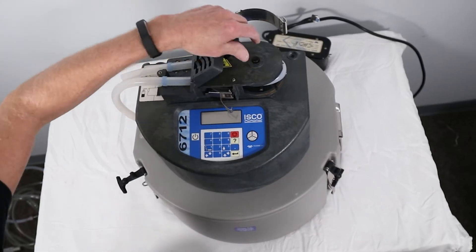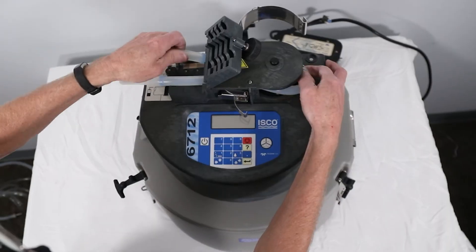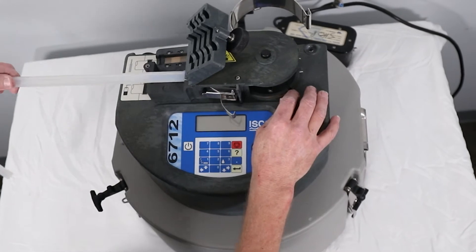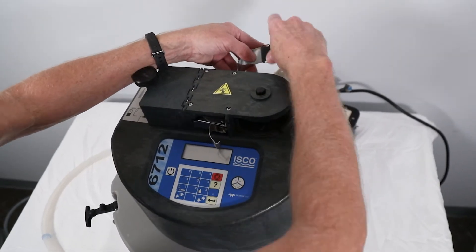Loosen the liquid detector cover thumb screw. Pull the pump tubing off of the bulkhead fitting and pull the pump tubing out of the sampler head. Remove any silicone deposits from the pump rollers or pump band.